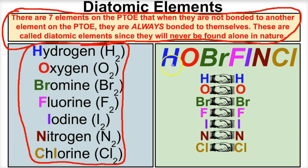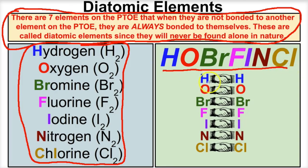If we take a look over here — hydrogen, oxygen, bromine, fluorine, iodine, nitrogen, and chlorine together — we line them up and that's going to spell Hober Finkel. These are the seven diatomic elements on the periodic table.